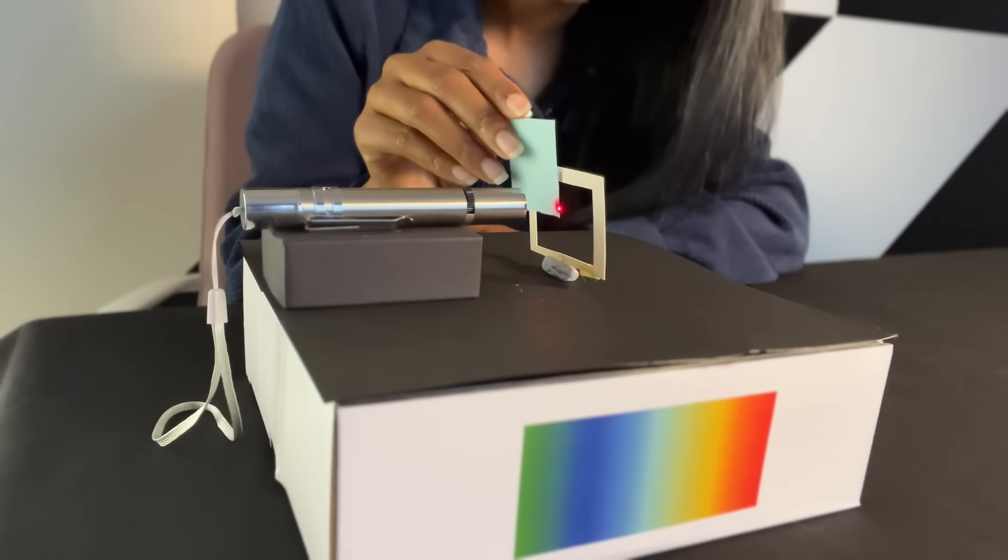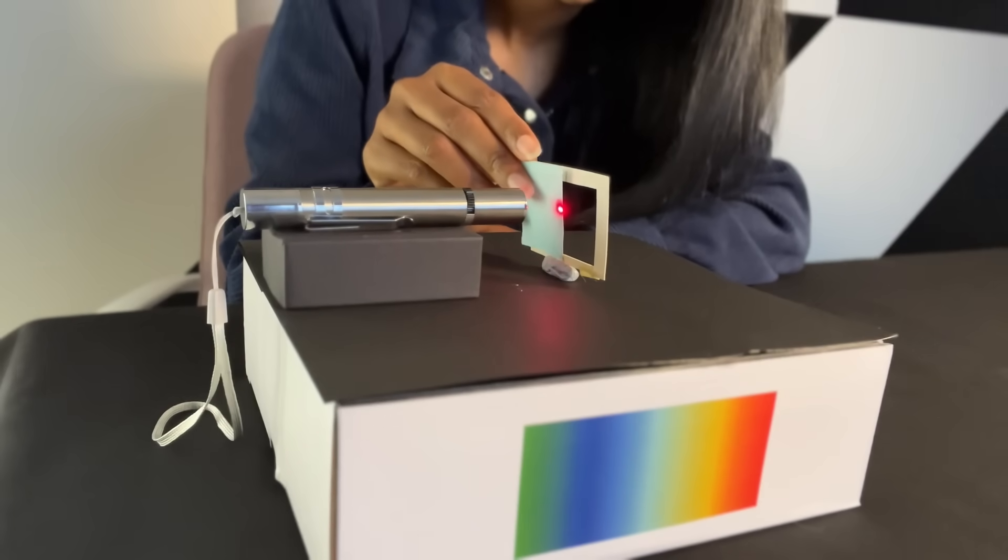So why don't we do a similar experiment with light and see what happens? Will light bend and spread out or will it go straight? I'm going to use a piece of paper as the obstruction to find out. And there you go. The laser light does actually spread out. Case closed. Light is a wave, right?